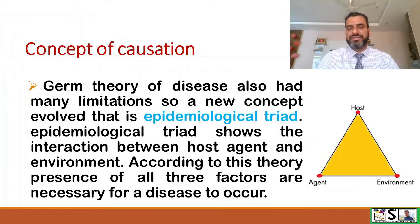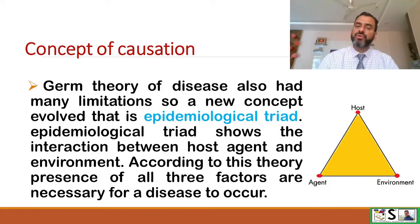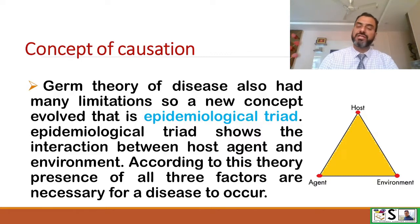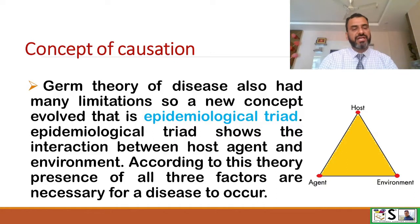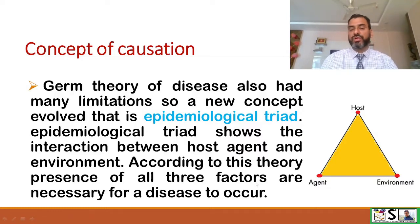The germ theory of disease also had many limitations. So a new concept evolved, known as the epidemiological triad. The epidemiological triad shows the interaction between host, agent, and environment. According to this theory, the presence of all three factors is necessary for a disease to occur.